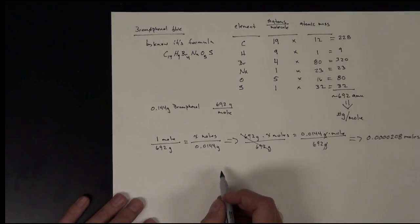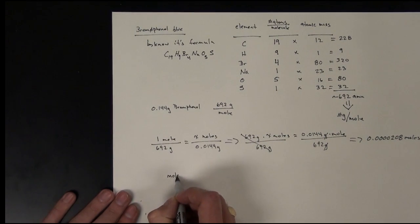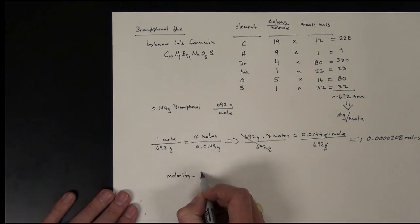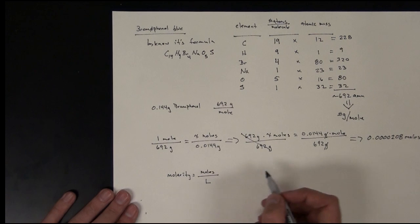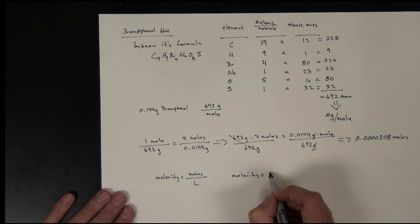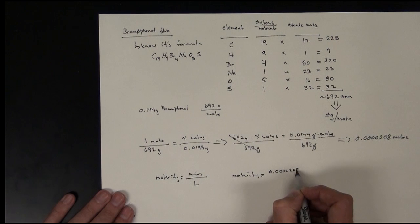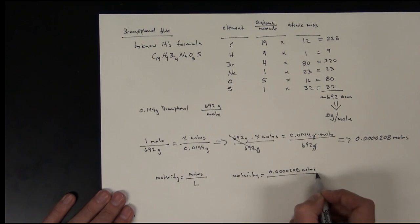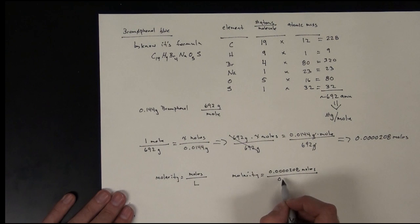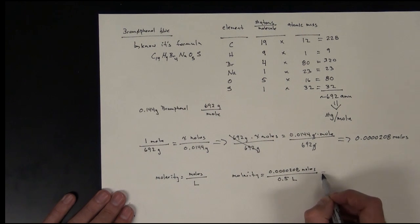So now I need to take this number of moles and enter it into the other part of the equation. So molarity is equal to moles per liter. And so in our case, molarity is going to be equal to 0.0000208 moles. And I had 500 milliliters or 0.5 liters. And so when I solve for this, I get 41.6 micromolar.